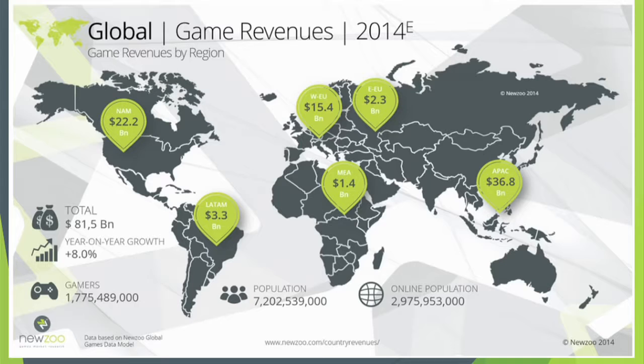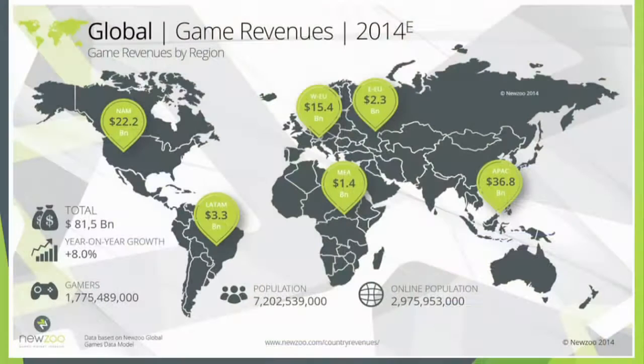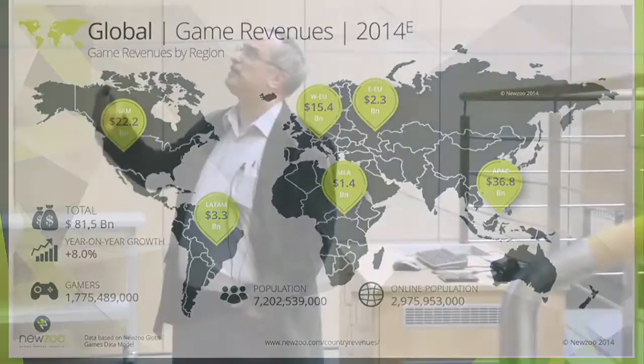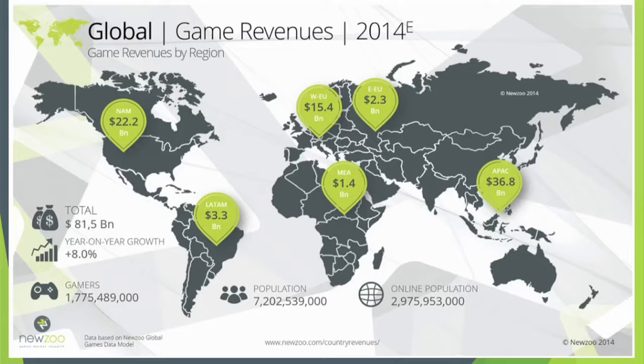Graczy na świecie jest już ponad miliard siedemset. Na siedem miliardów ludności jest ponad miliard siedemset graczy i prawie trzy miliardy ludzi, którzy korzystają z internetu. Roczny wzrost przychodów firm branży gier wideo wynosi 8% – mało jest takich gałęzi przemysłu o takiej dynamice wzrostu. Produkcja rozkłada się nierównomiernie – są trzy duże rynki: Azja (największy), Stany Zjednoczone i Europa. Afryka i Ameryka Południowa są znacznie słabiej reprezentowane.